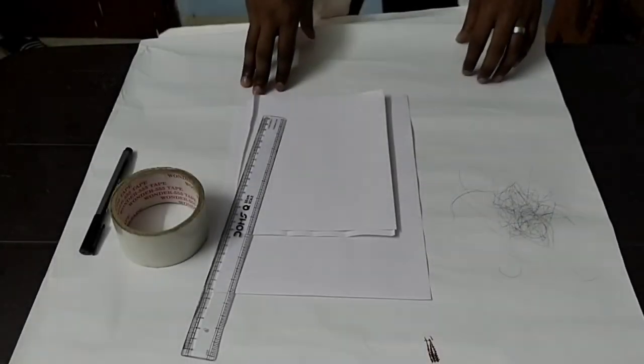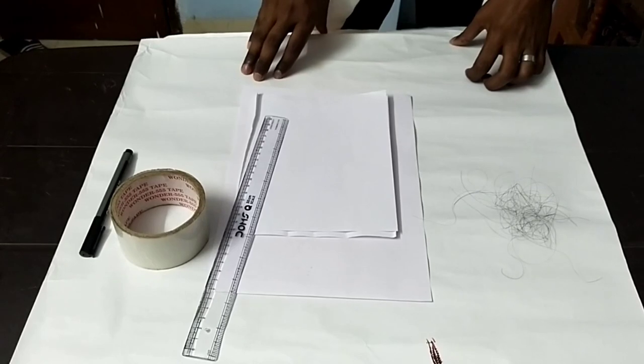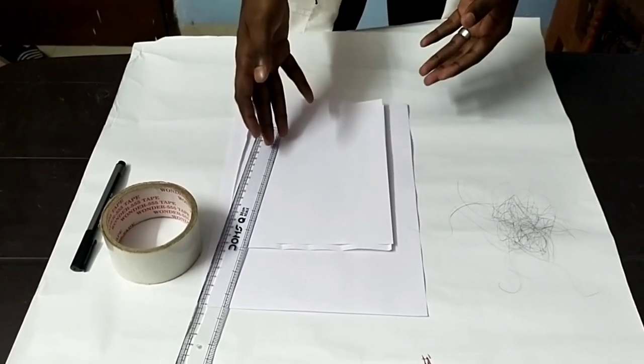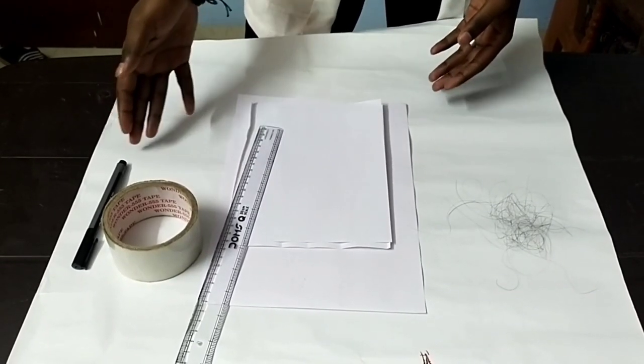Now let's see the requirements for the druggist fold practical. I will utilize the following items for conducting this experiment: the hair sample, paper, ruler, cellophane tape, and a marker.